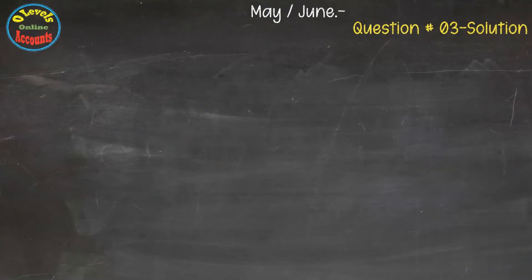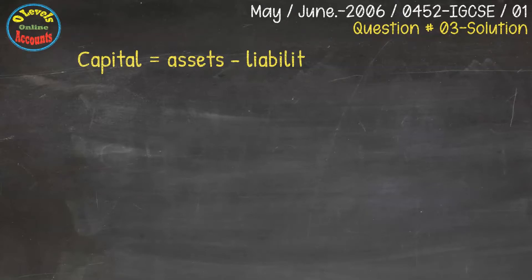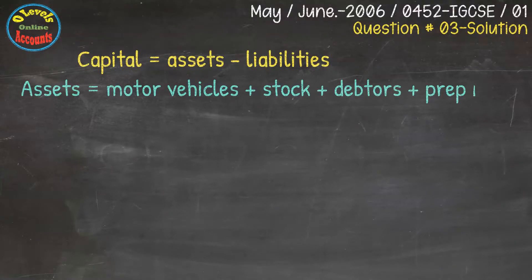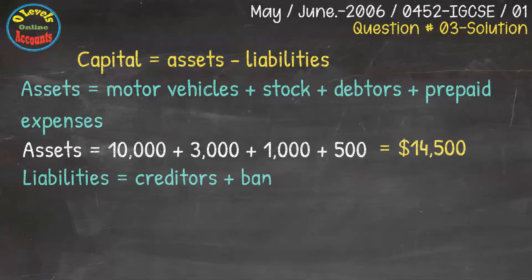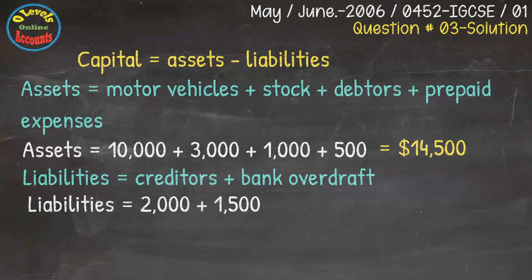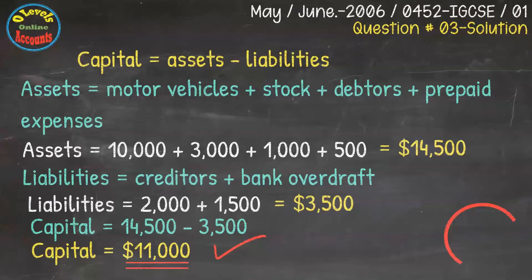We have question number 3 from October/November 2006, 0452 IGCSE Paper 1. In this question, we have to find out capital. We use the equation: capital equals assets minus liabilities. We list the assets — motor vehicle, stock, debtors, and prepaid expenses — giving a total assets value of 14,500. Then we list the liabilities — creditors and bank overdraft — giving a liabilities figure of 3,500. Putting these into the equation, we get capital of 11,000, which is the correct answer with the B option.